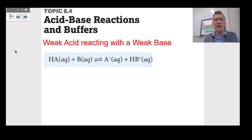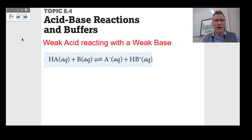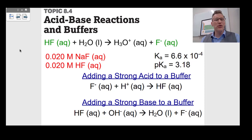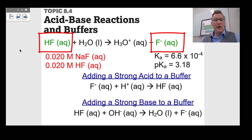We could also have a weak acid reacting with a weak base. If HA donates an H+, you're left with conjugate base A− and BH+, the conjugate acid. Topic 8.4 also deals with buffers. We have a buffer when we have high concentrations of a weak acid and its conjugate base. Strong acids don't buffer — but a weak acid with its conjugate base will be a buffer. For example, 0.020 molar HF and 0.020 molar NaF: that's your weak acid with its F− conjugate base — we have a buffer.